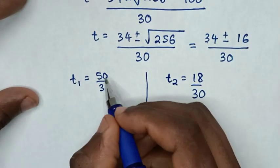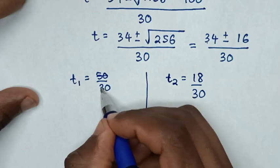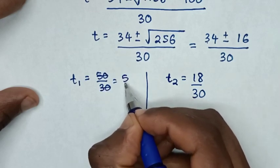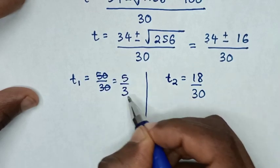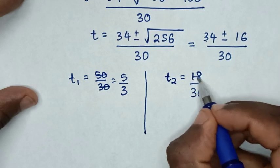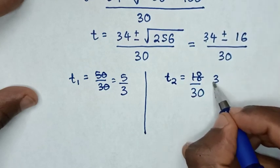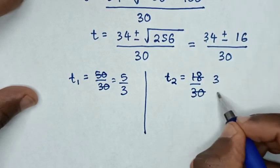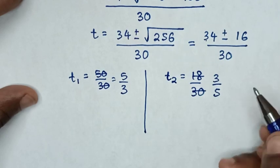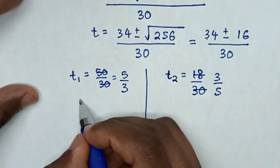Simplifying: 50 over 30 cancels by 10 to give 5 over 3. And 18 over 30 cancels by 6 to give 3 over 5. So t₁ equals 5/3 and t₂ equals 3/5.